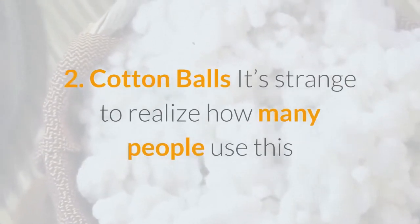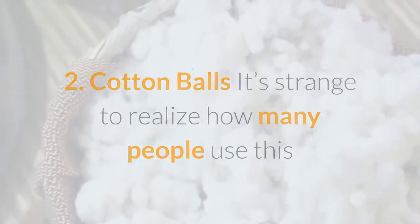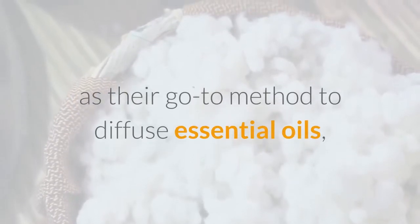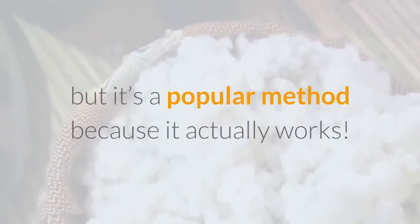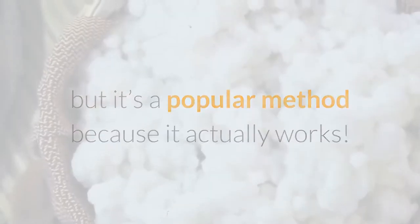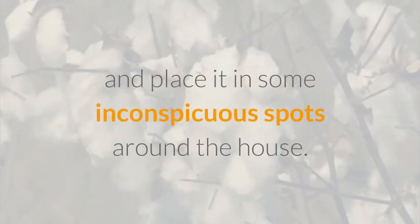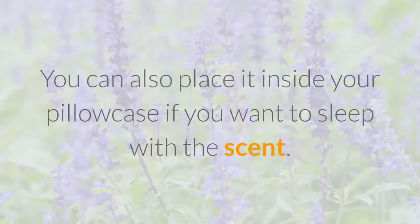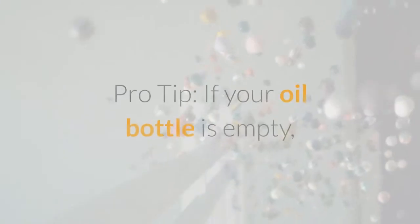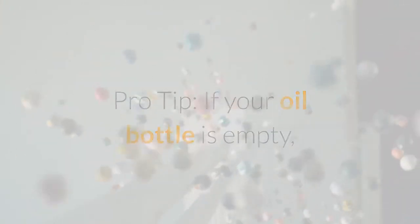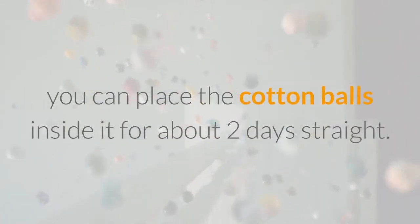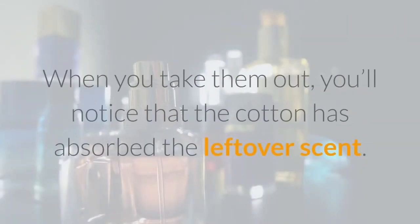Method 2: Cotton balls. It's a popular method because it actually works — dampen the cotton with some drops of oil and place it in inconspicuous spots around the house. You can also place it inside your pillowcase if you want to sleep with the scent. Pro tip: if your oil bottle is empty, place cotton balls inside it for about two days. When you take them out, the cotton will have absorbed the leftover scent.